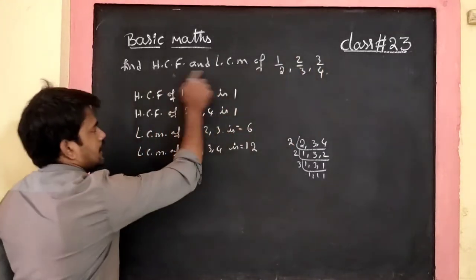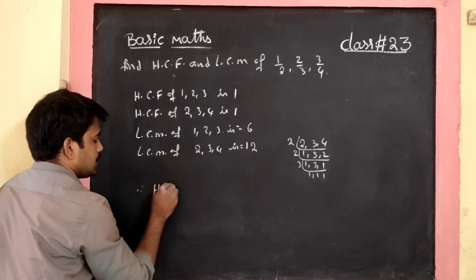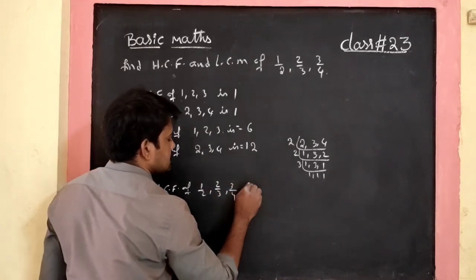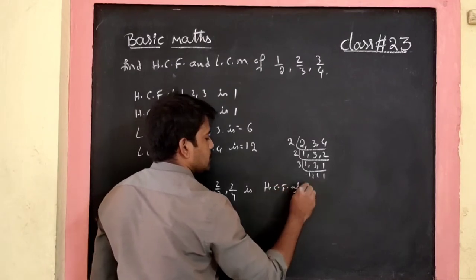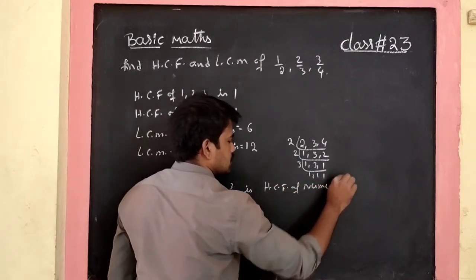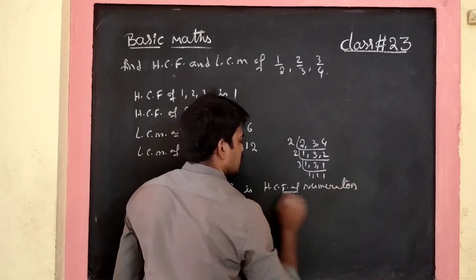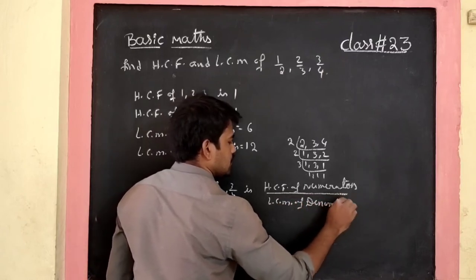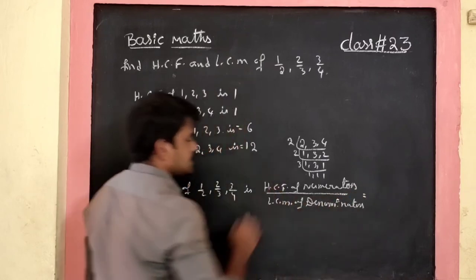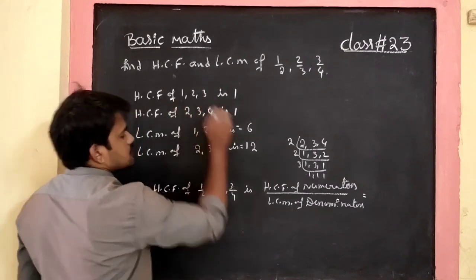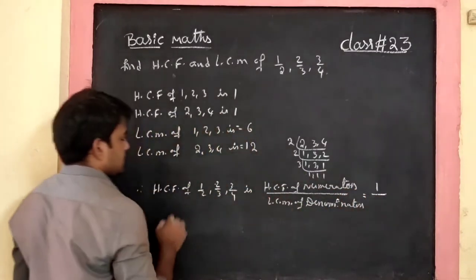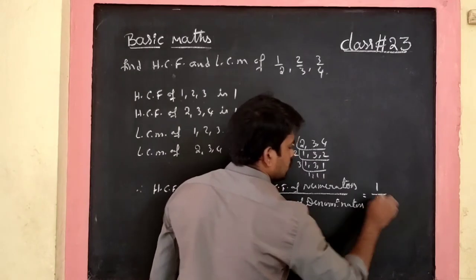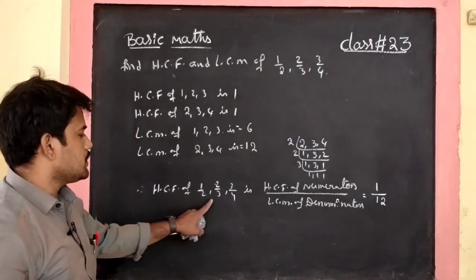So HCF of fractions 1/2, 2/3, 3/4 equals HCF of numerators by LCM of denominators. HCF of numerators 1, 2, 3 is 1, and LCM of denominators 2, 3, 4 is 12. So HCF = 1/12.